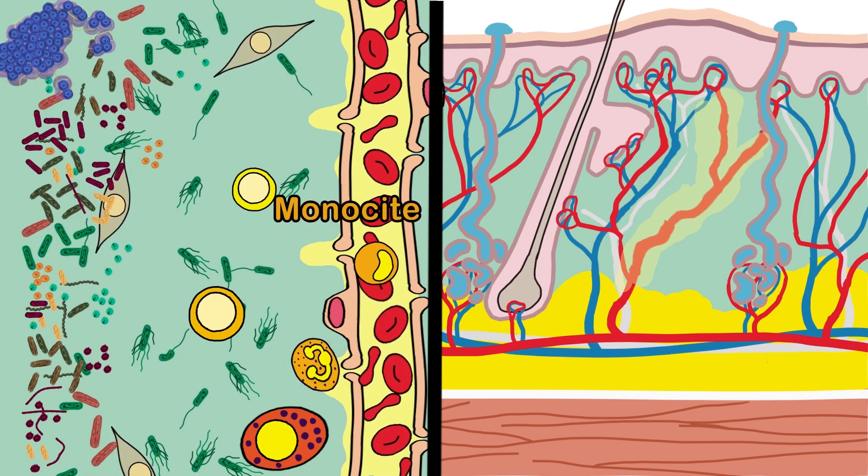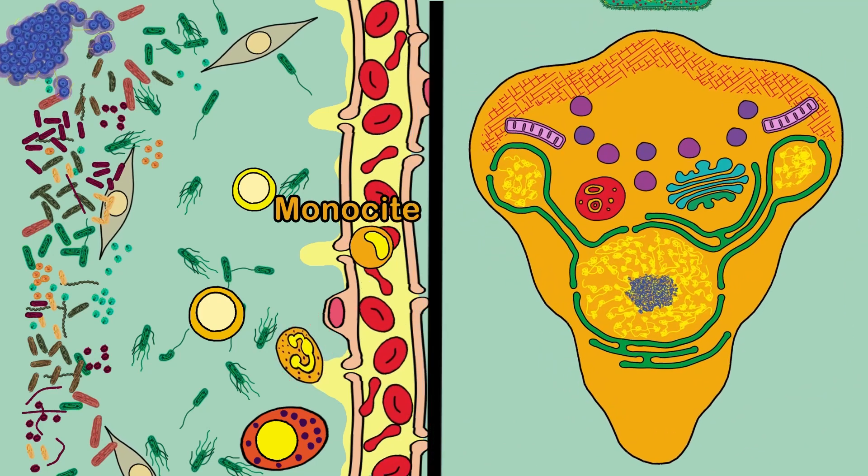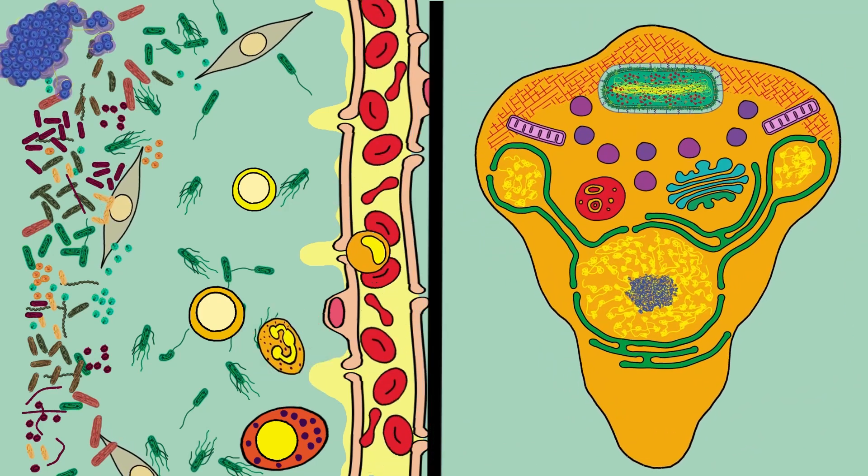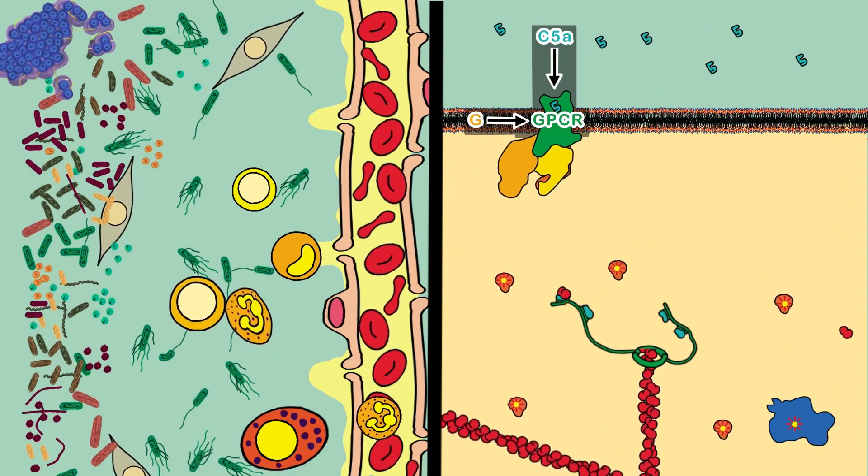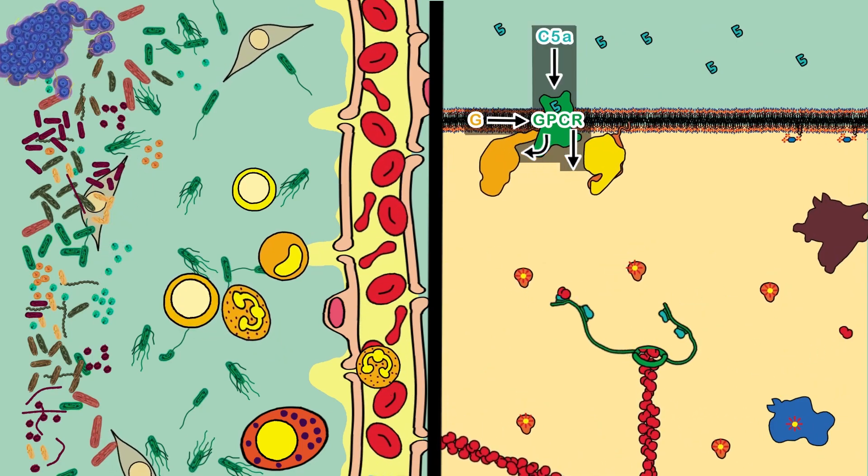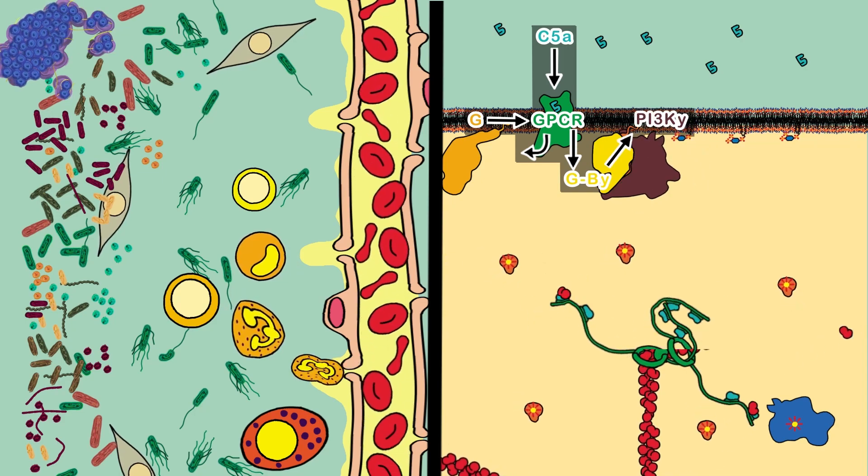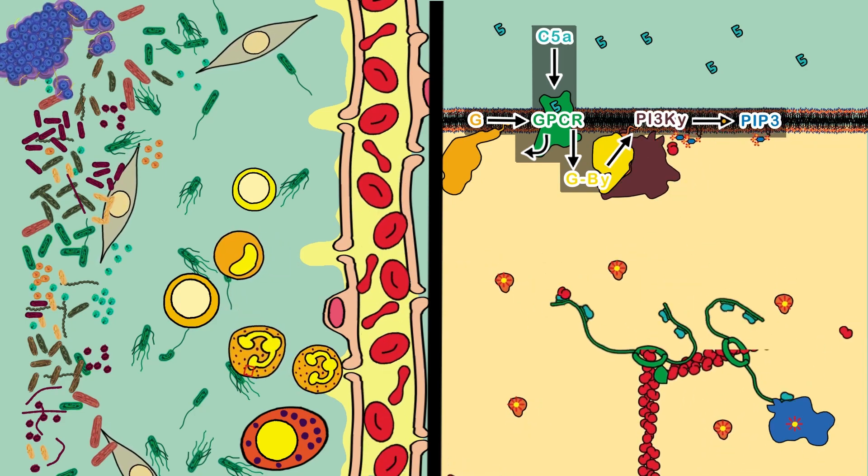Phagocytes detect the presence of components 5a and 3a and track their source like a dog following a scent. Receptors on the membrane of neutrophils bind to components 5a and 3a and activate metabolic pathways that promote polymerization of actin filaments in the cell,